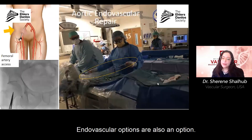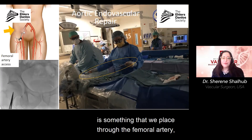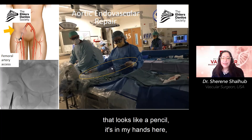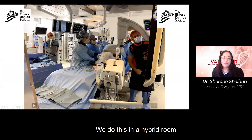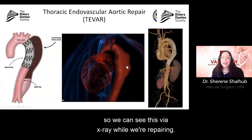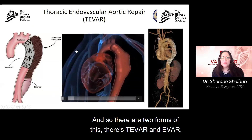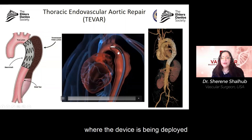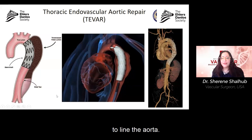Endovascular options are also available. Aortic endovascular repair is performed through the femoral artery — the devices are loaded on a mechanism that looks like a pencil and deployed in a hybrid room with imaging equipment so we can see via x-ray during the repair. There are two forms: TVAR and EVAR. TVAR is the stent graft for the thoracic aorta, as you can see in this video where the device is being deployed to line the aorta.